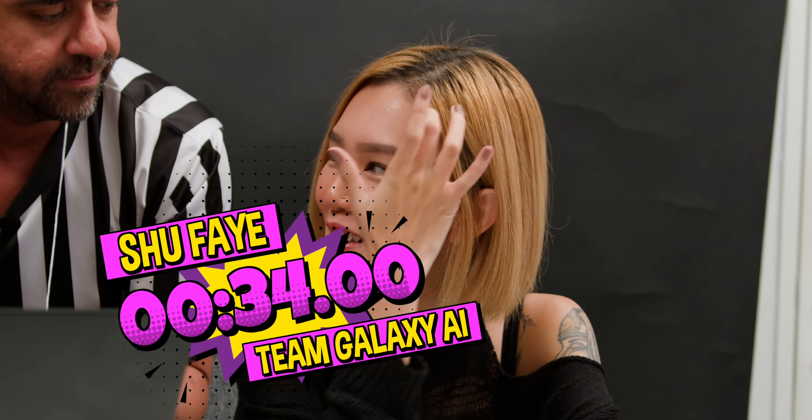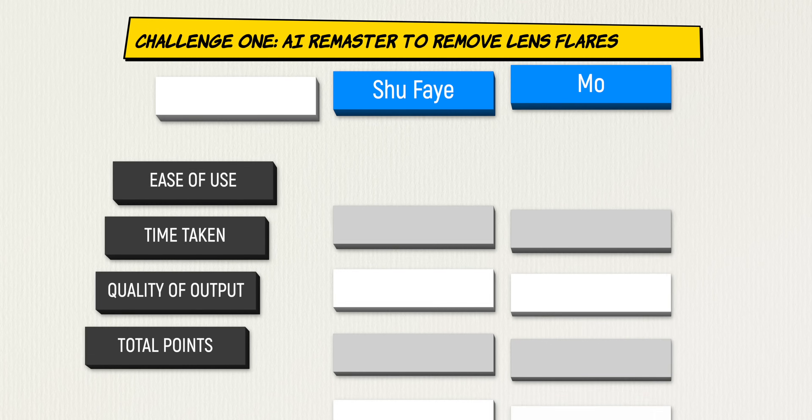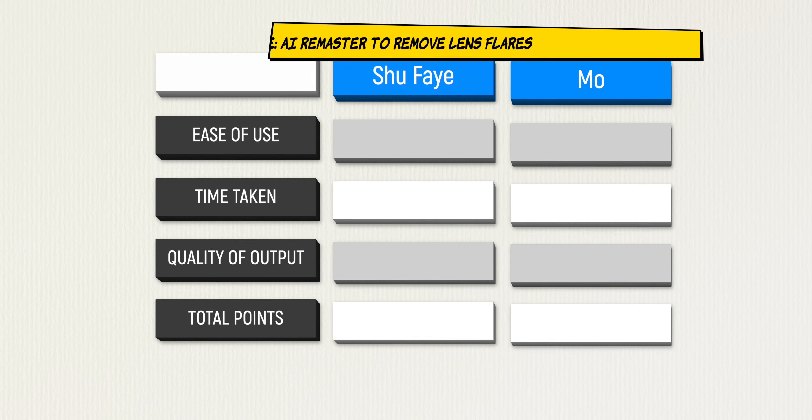Shufei's actual time, give or take about 10 seconds since she didn't start immediately, was around 34 seconds. Mo took about 2 minutes and 47 seconds — very long. Mo brushes it off saying he went easy in the first challenge. Points will be calculated based on the three elements, and they move on to challenge two.